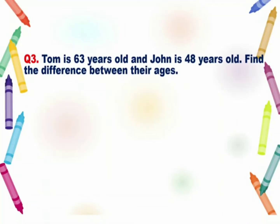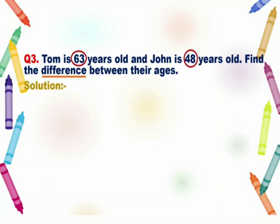Our next subtraction story is: Tom is 63 years old and John is 48 years old. Find the difference between their ages. Here you can see that the keyword is 'difference'. We will underline 'difference' and circle the numbers in the statement, that is 63 and 48. Now we will form a statement.